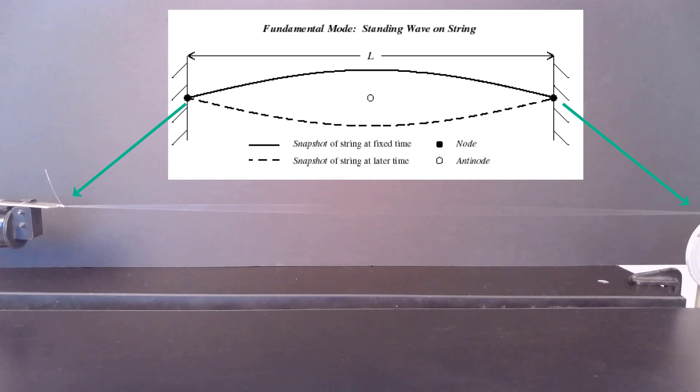Now we have the motor running and right now what we are showing is the fundamental frequency. This is our first antinode. You can tell that because it has the two well-defined nodes on the side and then the one antinode in the middle.